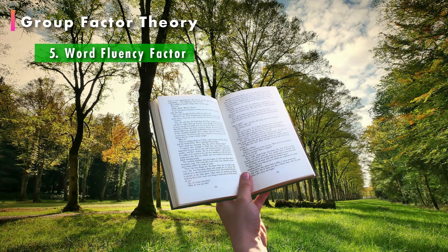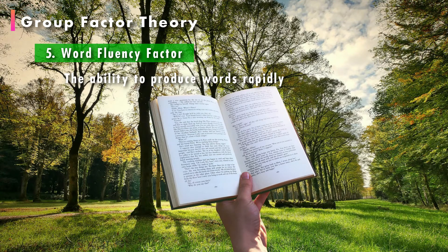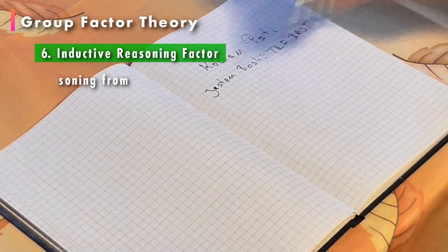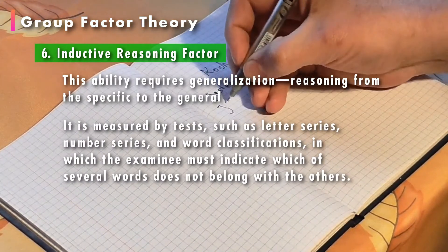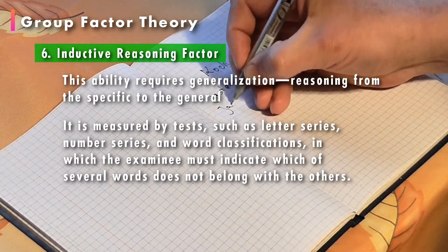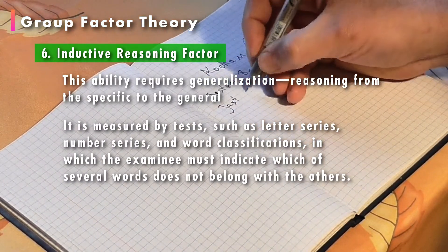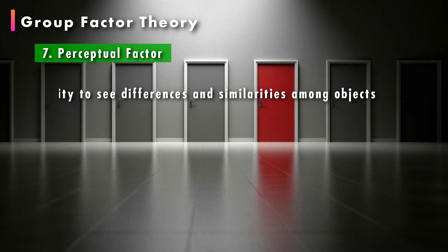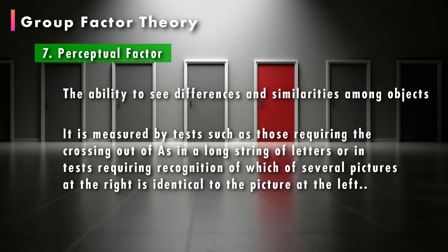The memory factor, which involves the ability to memorize quickly. The word fluency factor, which is involved whenever the subject is asked to think of isolated words at a rapid rate. The inductive reasoning factor, which concerns the ability to generalize through specific examples. The perceptual factor, which concerns the ability to perceive objects accurately.